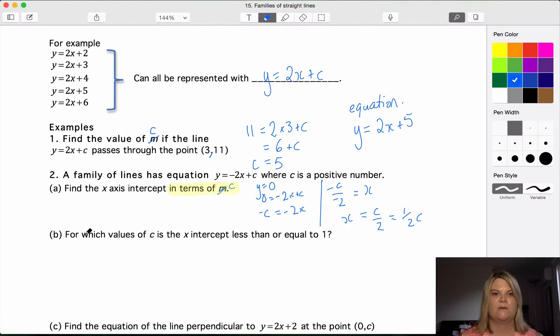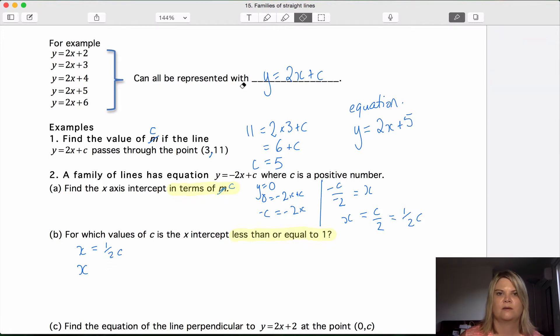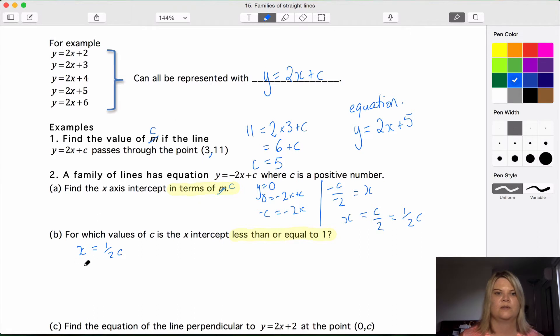Question B. For what values of c is the x-intercept less than or equal to 1? So we found the x-intercept is here. x equals a half c. But we want the x-intercept which is a half c to be less than or equal to 1.